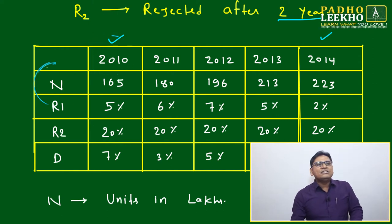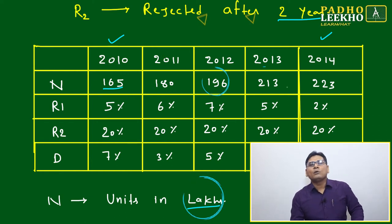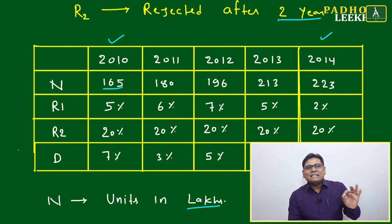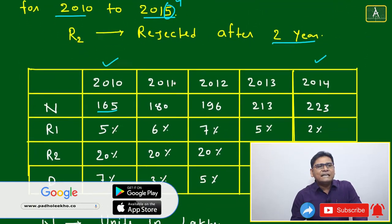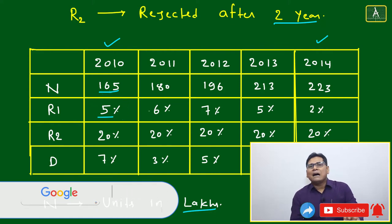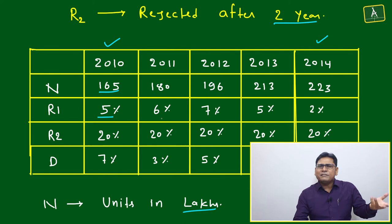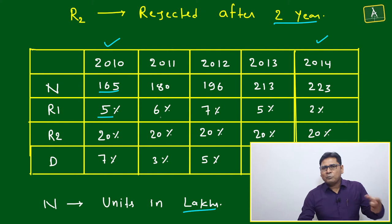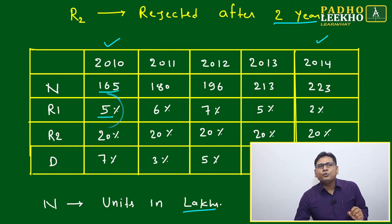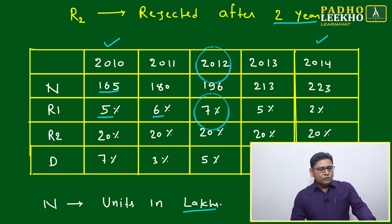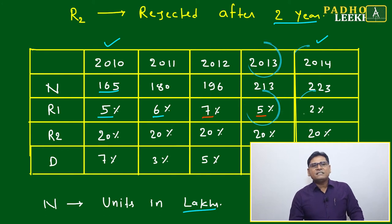The table shows: Year 2010 — N (units produced) = 165 lakhs; 2011 = 180 lakhs; 2012 = 196 lakhs; 2013 = 213 lakhs; 2014 = 223 lakhs. R1 (percentage of units rejected during manufacturing or final inspection): 2010 = 5%, 2011 = 6%, 2012 = 7%, 2013 = 5%, 2014 = 2%. R2 (rejected after two years) = 20% for all years.